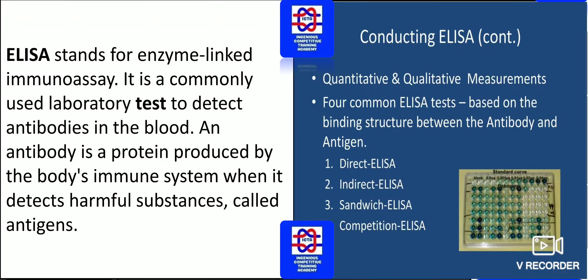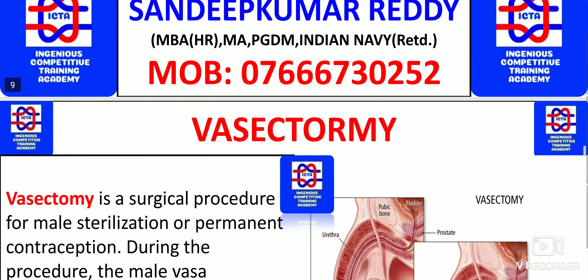After the Widal test, there is the ELISA test, which is conducted for the identification of AIDS — acquired immunodeficiency syndrome. ELISA stands for enzyme-linked immunoassay. It is a commonly used laboratory test to detect antibodies in the blood. An antibody is a protein produced by the body's immune system when it detects harmful substances called antigens. There are various types of ELISA tests: direct, indirect, sandwich, and competition.